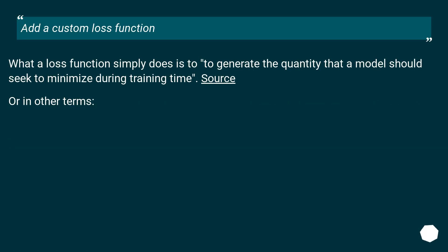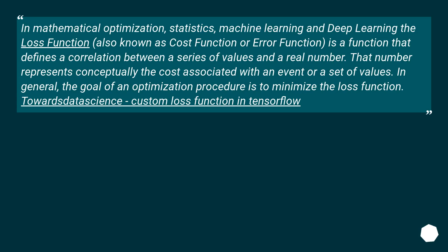A custom loss function simply defines the quantity that a model should seek to minimize during training time. In mathematical optimization, statistics, machine learning, and deep learning, the loss function — also known as cost function or error function — is a function that defines a correlation between a series of values and a real number. That number represents conceptually the cost associated with an event or a set of values. In general, the goal of an optimization procedure is to minimize the loss function. See: Towards Data Science — custom loss function in TensorFlow.